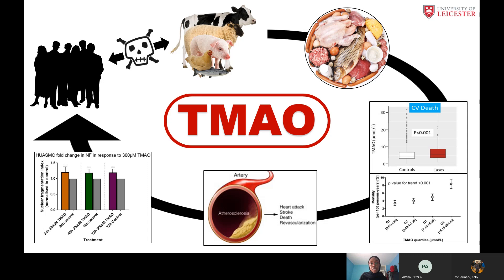A hallmark of cardiovascular diseases is atherosclerosis — a condition of the arteries where dysfunction of the cells lining the artery wall allows the buildup of fat deposits within it, as shown in the image of the artery. Interestingly, TMAO has been linked to the development of atherosclerosis. The focus of my research has therefore been to examine how TMAO may affect the function of the cell types found in the two innermost layers of the artery, namely endothelial and smooth muscle cells.